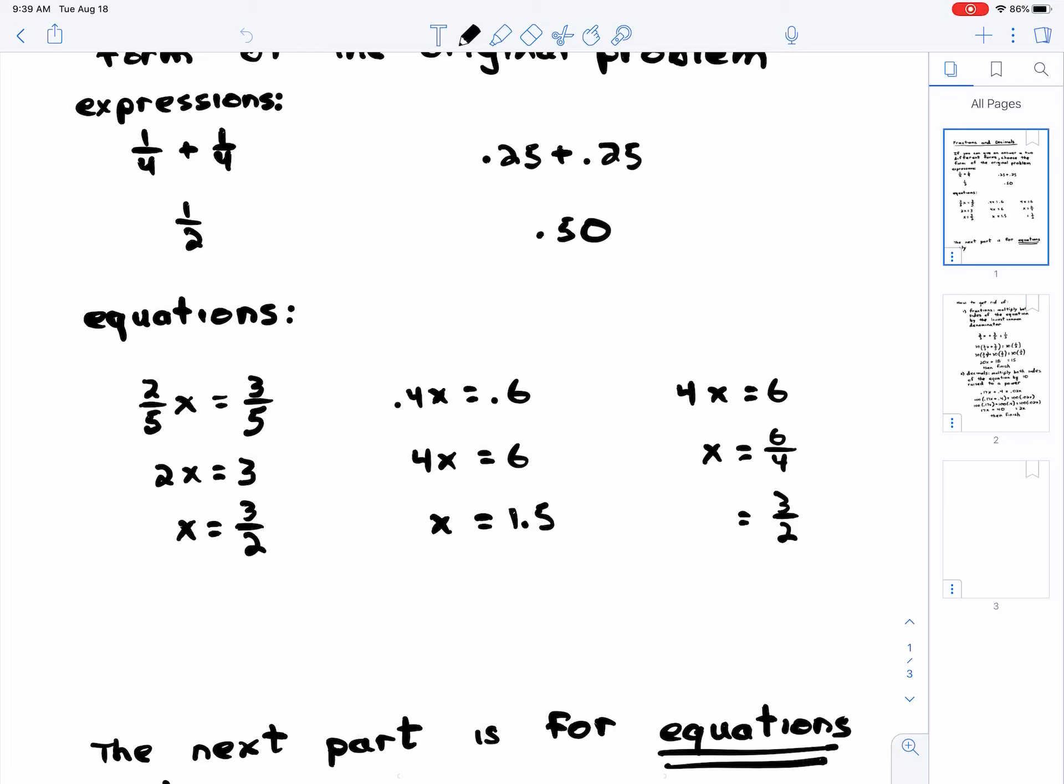The second problem: 0.4x equals 0.6. Multiply both sides by 10 to get rid of the decimal. You get 4x equals six and x equals 1.5. Not three-halves, but 1.5.